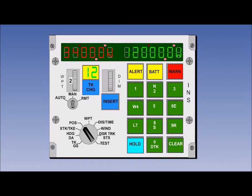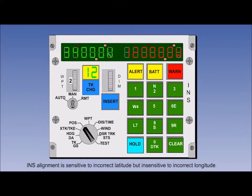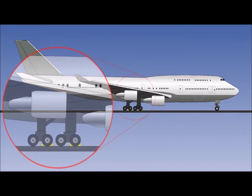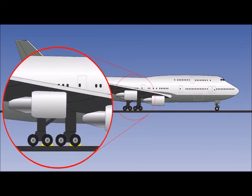It is essential that the correct initial latitude is entered. However, an incorrect initial longitude does not degrade alignment. Alignment is limited to latitudes of less than approximately seventy degrees; the aircraft can subsequently operate at high latitudes but cannot be initially aligned there. The aircraft cannot be moved at all during the alignment process — even vibration from a running engine or gusty wind may prevent alignment.